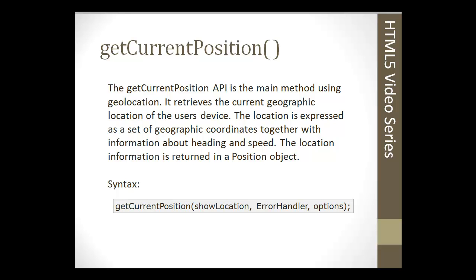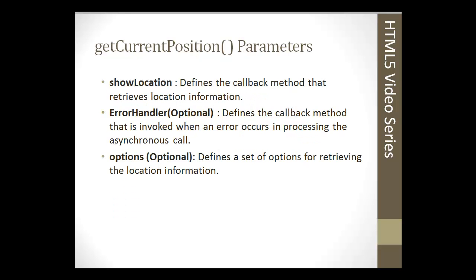The `getCurrentPosition` method's first required parameter is show location — this is a handler method that gets called if the position is obtained successfully, specified by the success callback parameter. Next is the error handler method, which is invoked if there's any kind of error or if positioning fails. Finally, there's the options parameter, which defines a set of options that I'll show you when we start programming.